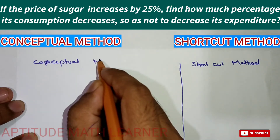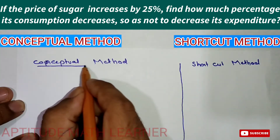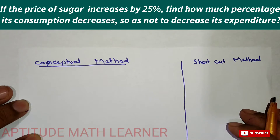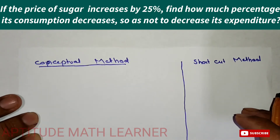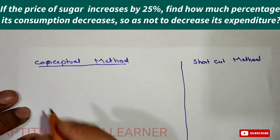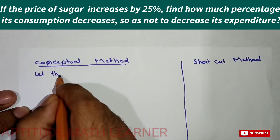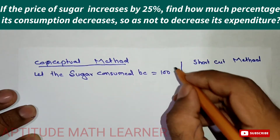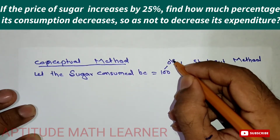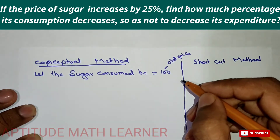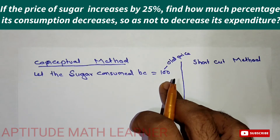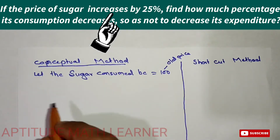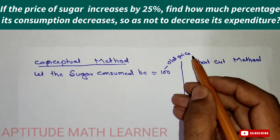For the conceptual method, the first thing we take is: let the old price of sugar be 100. This is the old price of the sugar before the increase of 25 percent.